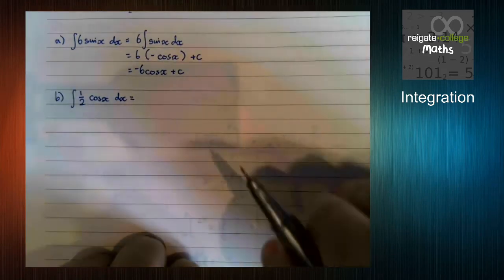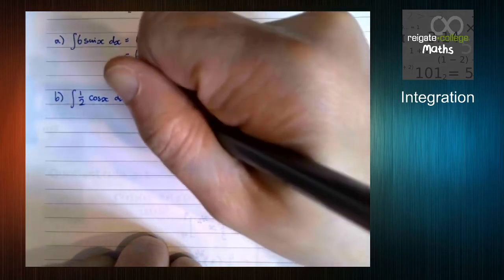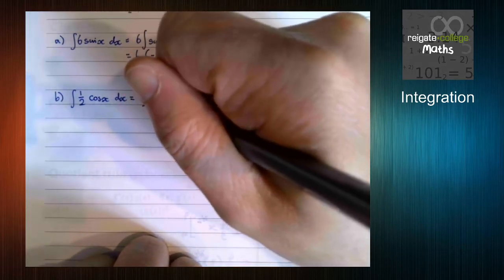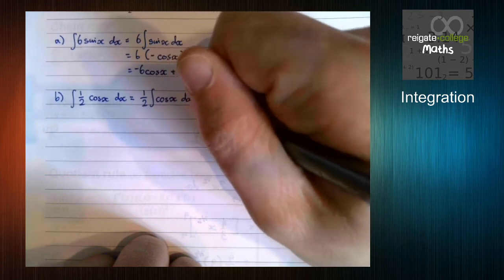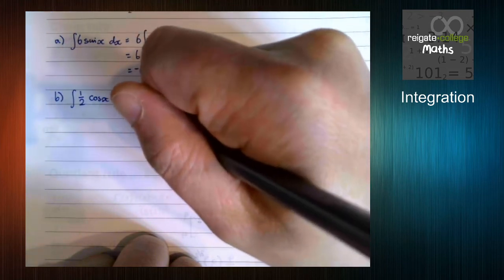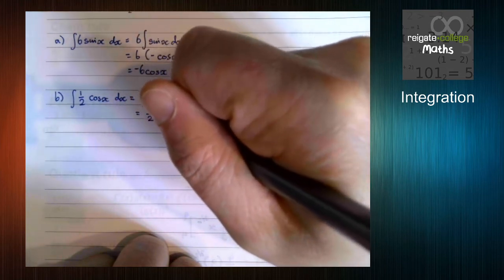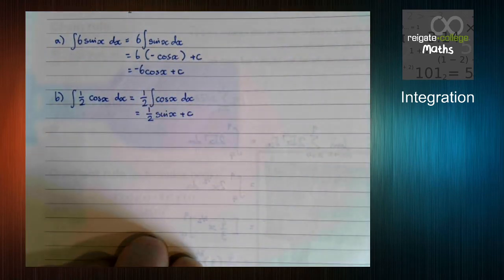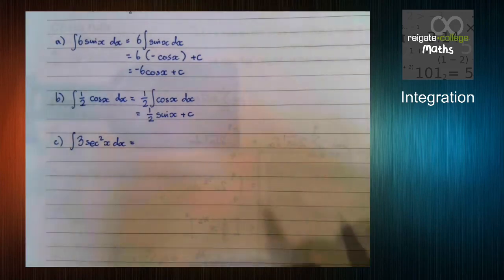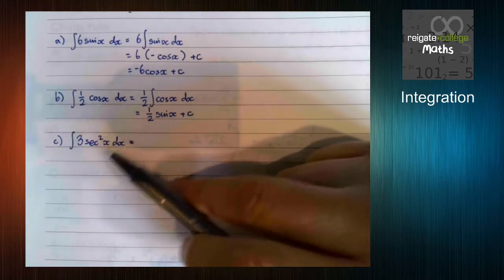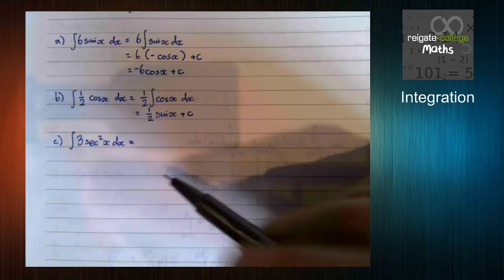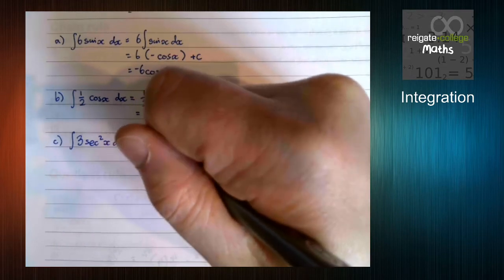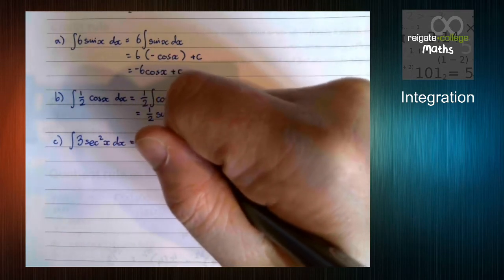This next one works in exactly the same way. A half cos x. Cos x integrates to sine x. And we've got a plus c on. Part c looks weird because it's got the sec squared, but don't forget that's in the formula book. Other than that, again, it works the same way.